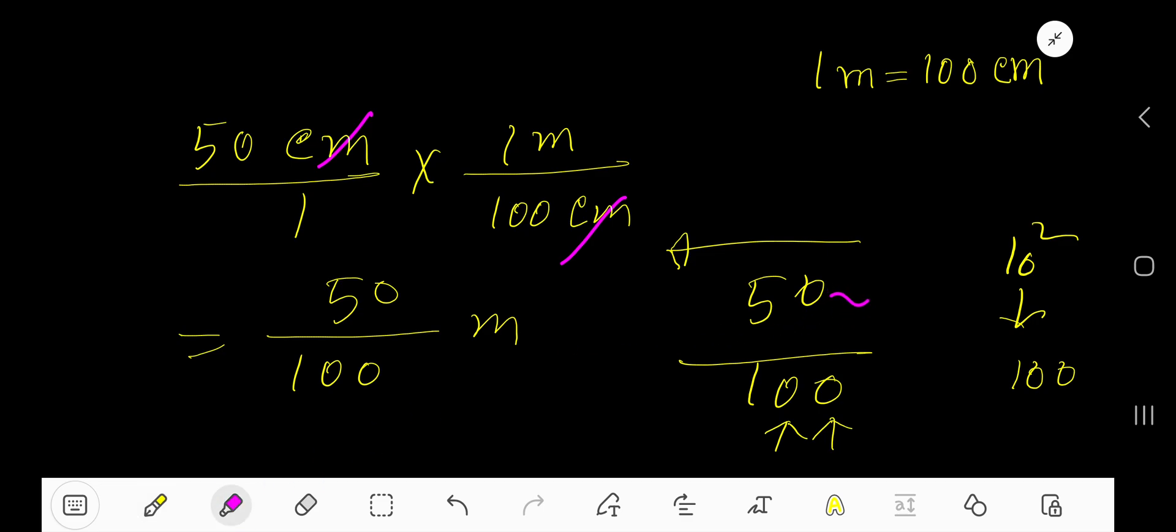Since this is a whole number, the decimal point will first appear here. Then 1, 2. So we are getting 0.50. You can add one more zero to mean that this is less than 1. So 0.50 meters is our answer.